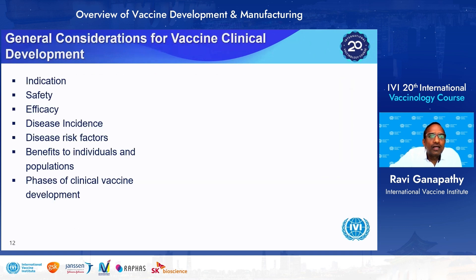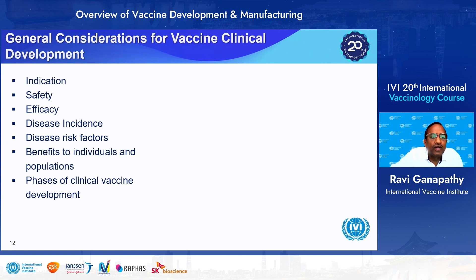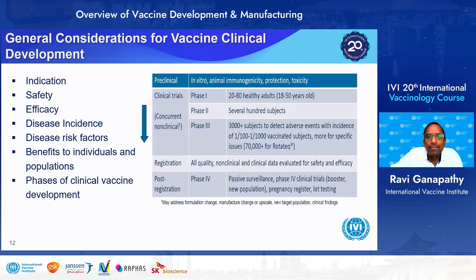What are the general considerations for vaccine clinical development? We need to understand the indication the product is developed for, the safety profile, the efficacy profile, disease incidence, disease burden, benefits to individuals and populations, and what phases of clinical vaccine development are covered.